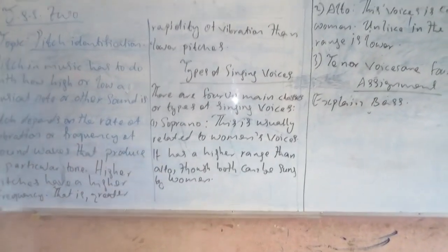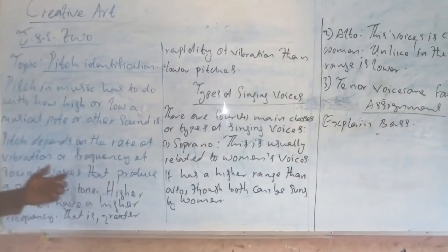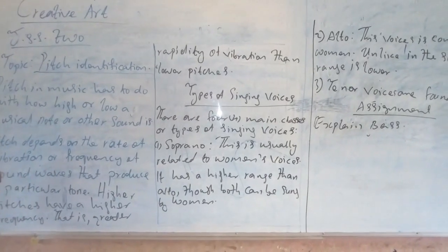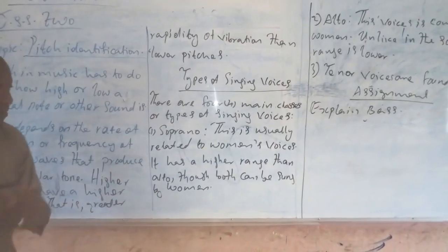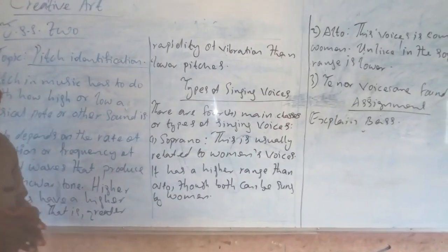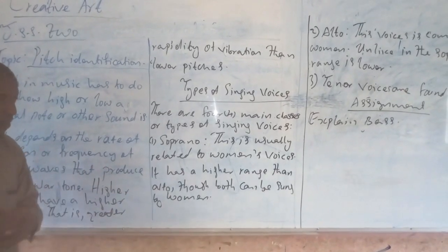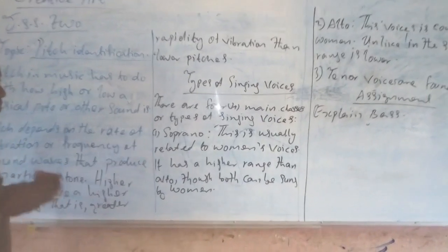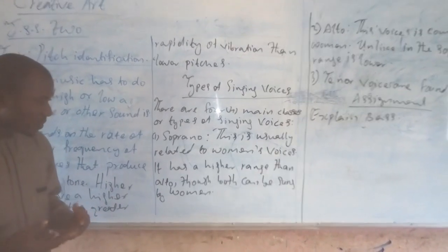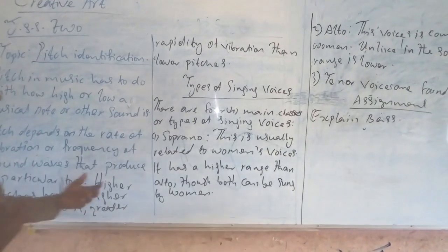So let's look at the types of singing voices. There are four main classes or types of singing voices. Number one is Soprano. This is usually related to women's voices. It has a higher range than other voices.